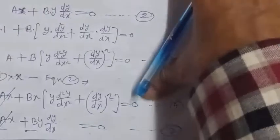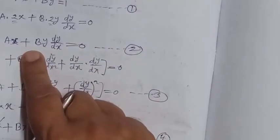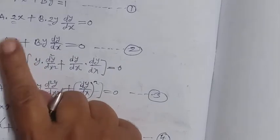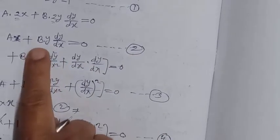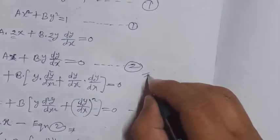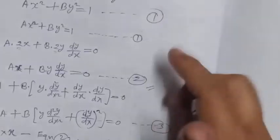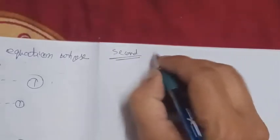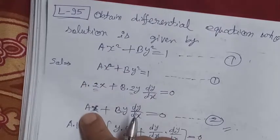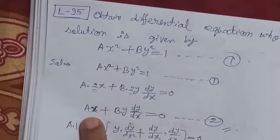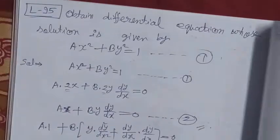For the second method, we start again with equations one and two. We have ax² + by² = 1 (equation 1) and ax + by(dy/dx) = 0 (equation 2). To eliminate the two arbitrary constants a and b, we notice that equation 1 has x² and equation 2 has only x, so we will multiply equation 2 by x.